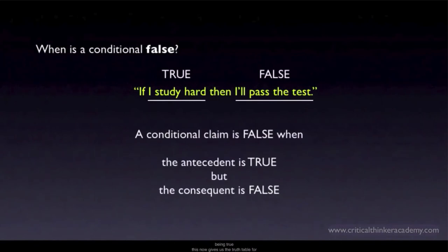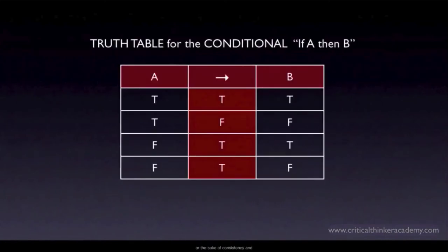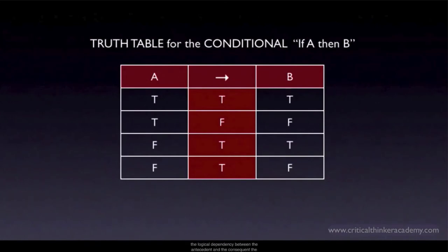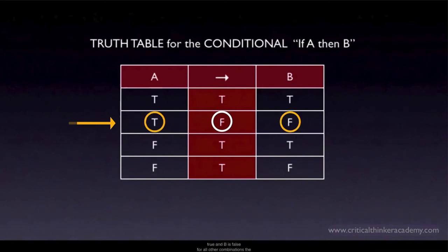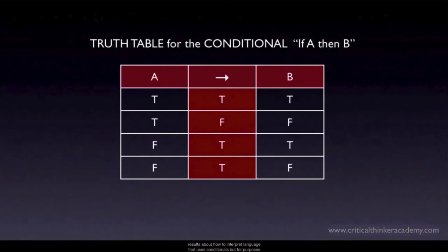This now gives us the truth table for the conditional. I placed the arrow symbol between A and B to represent the conditional operator, where A→B means 'if A then B.' The conditional asserts that if A is true, then you can infer B — it doesn't go the other way; it doesn't say that if B is true, then you can infer A. Notice that the second row gives the only combination of truth values that makes the conditional false: when A is true and B is false. For all other combinations, the conditional counts as true.